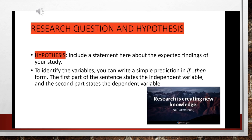For your hypothesis, include a statement about the expected findings of your study. Identify the variables and write a simple prediction: if this happens, then this will happen. The first part of the sentence states the independent variable and the second part states the dependent variable. We want to create new knowledge, so look at what has already been done and try to research something that leads on from somebody else's work — but it needs to be new knowledge. If you forget what the independent and dependent variables are, go back to the previous slide.